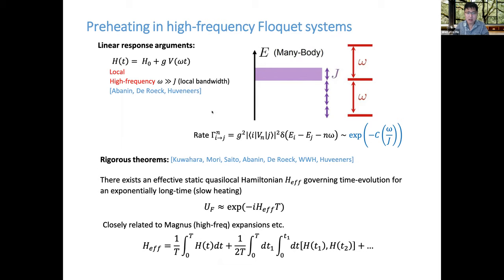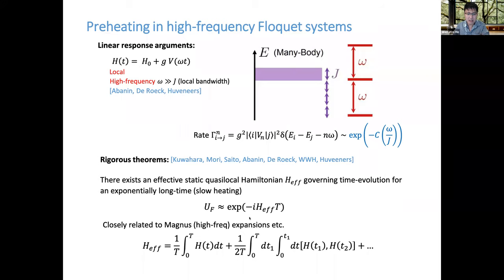One can promote this to a rigorous theorem: it's not just heating from one eigenstate that is slow, but the system actually has an approximate conserved quantity — an effective static quasi-local Hamiltonian H_eff — which governs the time evolution for an exponentially long time in the driving frequency. This is related to what people usually think of as the Magnus expansion: commutators of the driving Hamiltonian and so on. Basically, the system, even when driven at high frequencies, does not heat up quickly but looks as though it's being governed by an effective static local Hamiltonian.